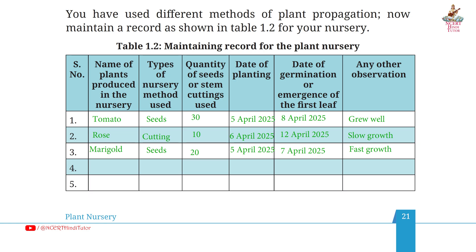Page 21, Table 1.2 — maintaining record for the plant nursery. First plant: tomato. Method: seeds. Quantity: 30. Date of planting: 5th April 2025. Date of germination: 8th April 2025. Observation: grew well.